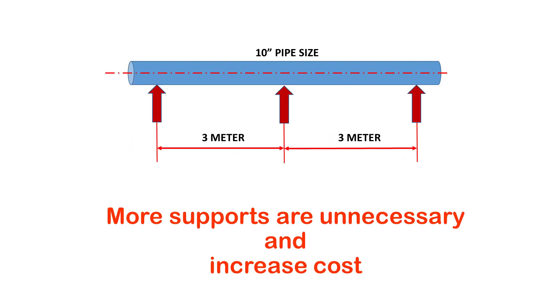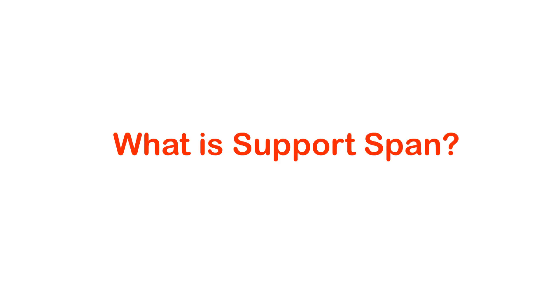What if we provide more supports in the piping system to avoid sagging? More supports are always unnecessary and increase the cost of the project. The distance between supports needs to be optimized in such a way to have the minimum number of supports and also to have zero sagging in the piping.